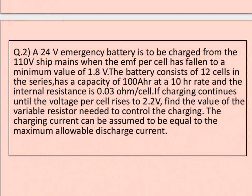Moving to question number 2: a 24-volt emergency battery is to be charged from a 110-volt supply when the EMF per cell has fallen to a minimum value of 1.8 volts. The battery consists of 12 cells in series, has a capacity of 100 ampere-hours at a 10-hour rate, and an internal resistance of 0.03 ohms per cell. If charging continues until the voltage per cell rises to 2.2 volts, find the value of the variable resistor needed to control the charging. The charging current can be assumed to be equal to the maximum allowable discharge current.